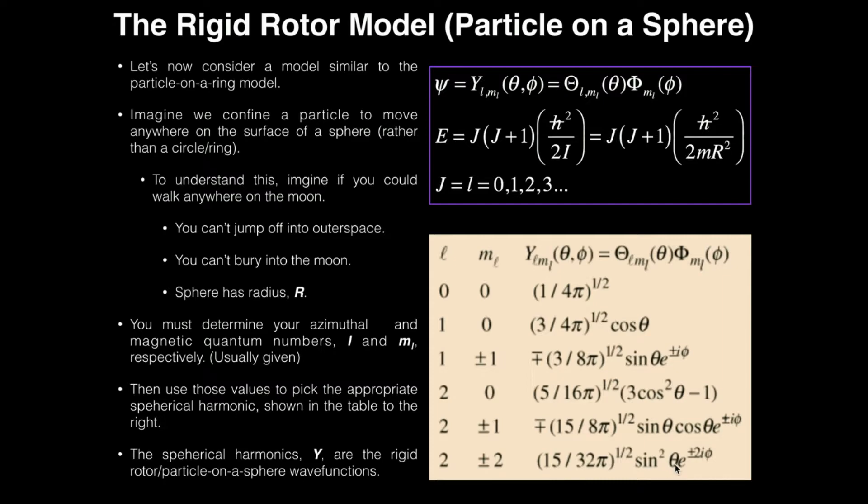So you need to know those two things to determine what your Y is, but these Y's right here, these are your psi's, basically. They're just given a different variable for whatever bizarre reason, just to complicate things on you. But that's what you do. You determine your azimuthal and your magnetic quantum number, and then you just look up your wave function in table. That's pretty much all there is to it.